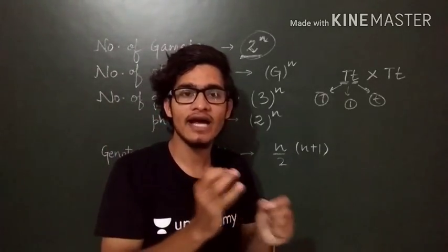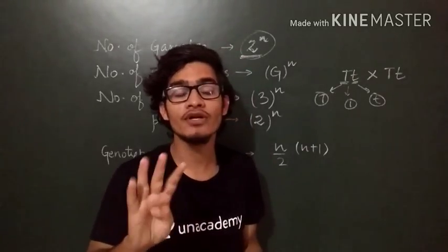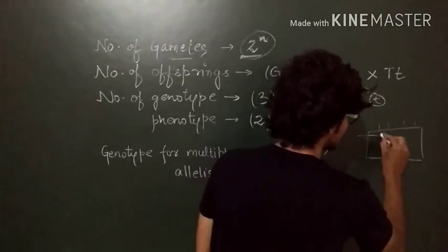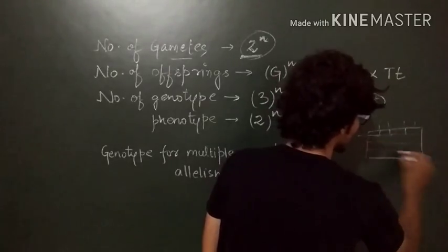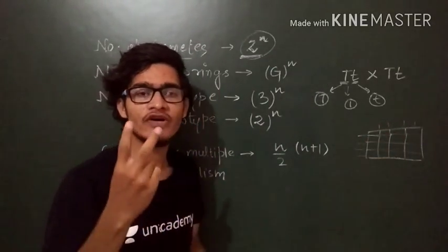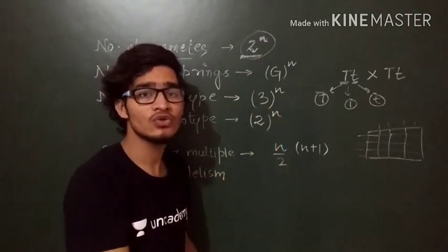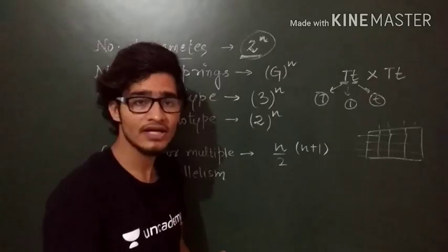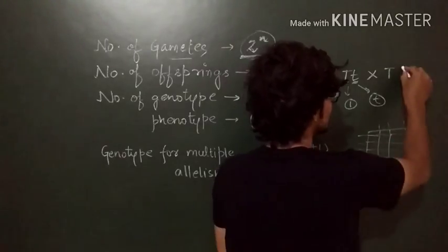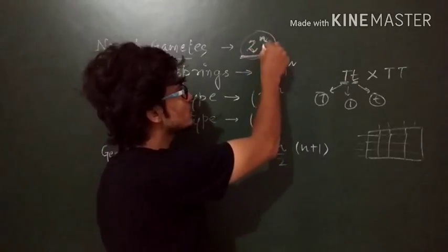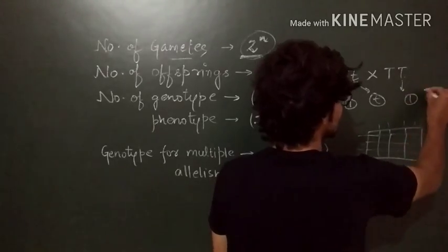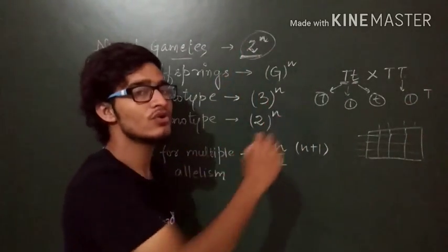When n equals 2, as in a dihybrid cross, we get 2 raised to the power 2, which is 4 different gametes. In the Punnett square, 4 gametes on each side give a total of 16 progenies. If the cross is homozygous, such as TT, there is no heterozygote, so n equals 0 and 2 raised to the power 0 equals 1 — only one gamete is formed, which is capital T.